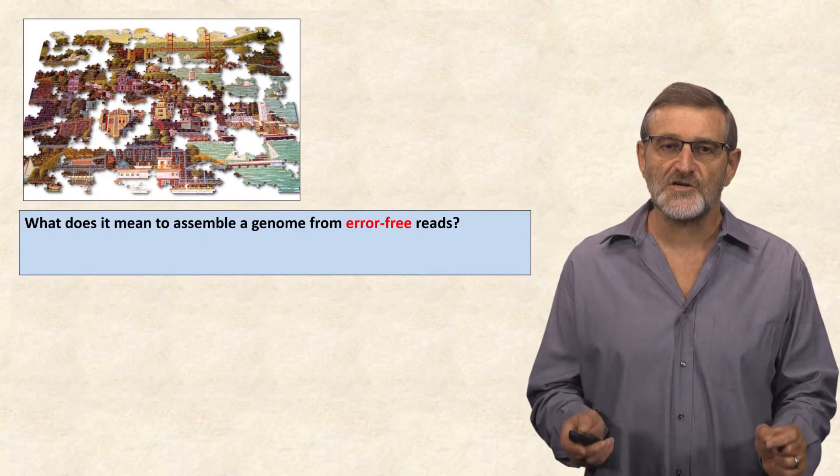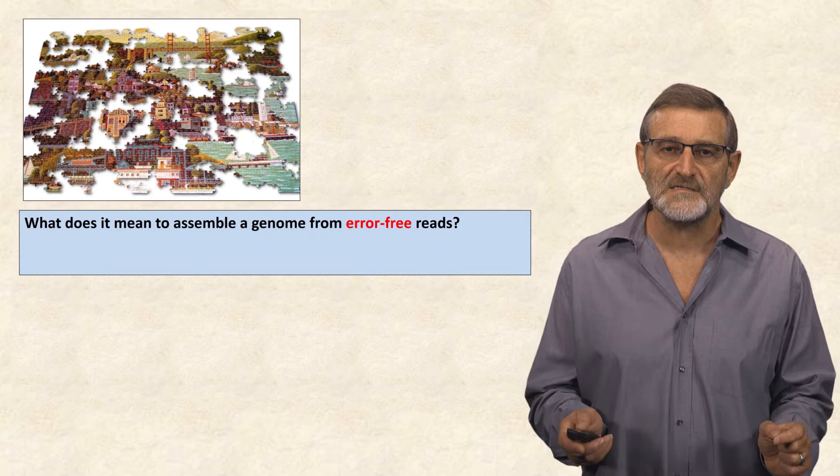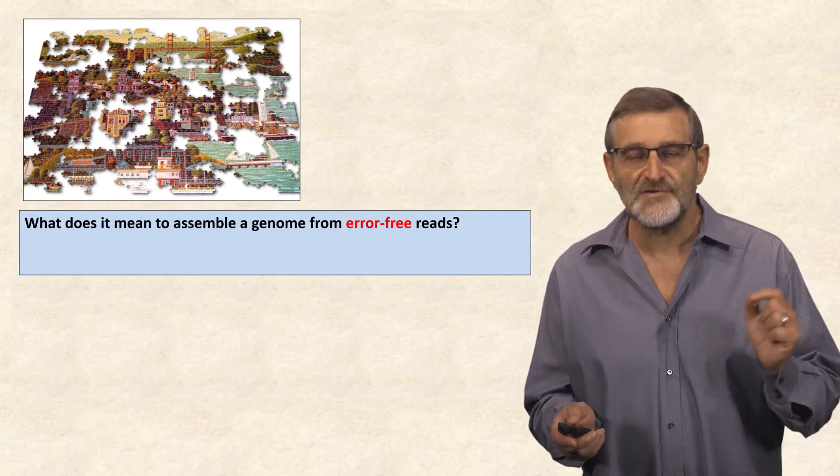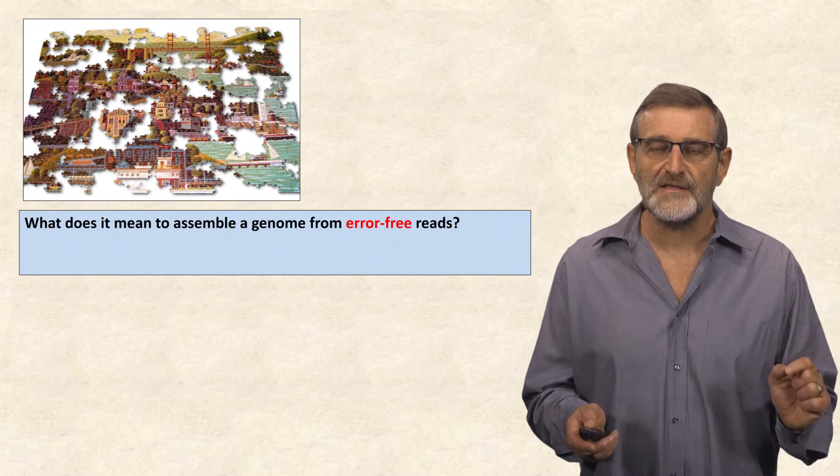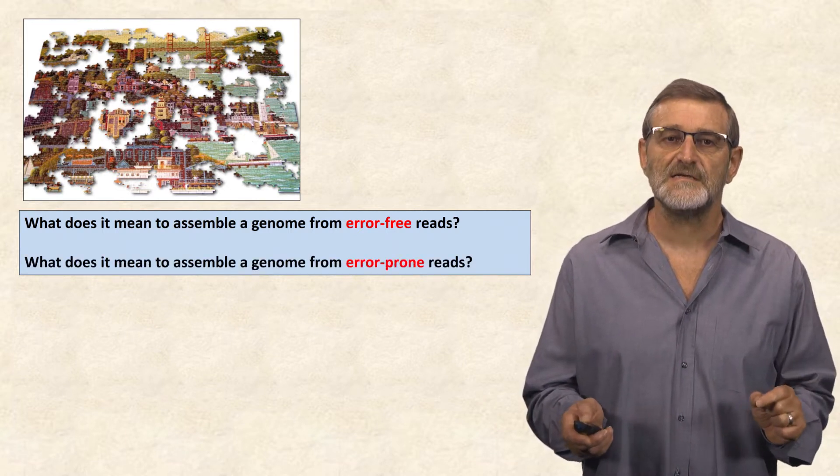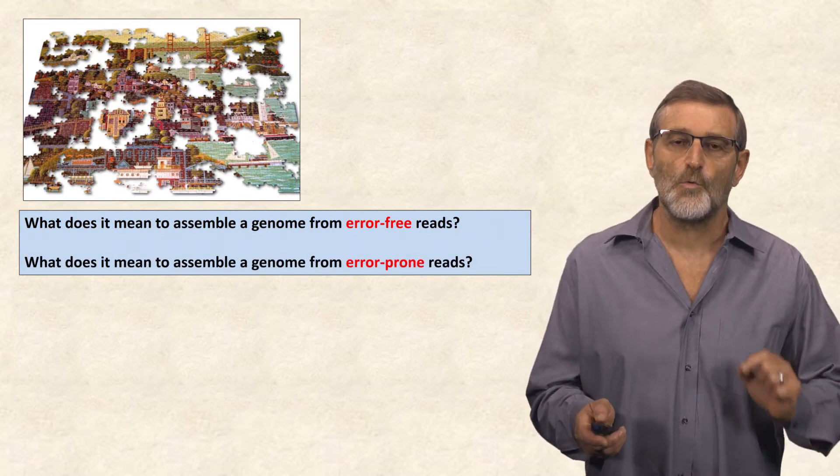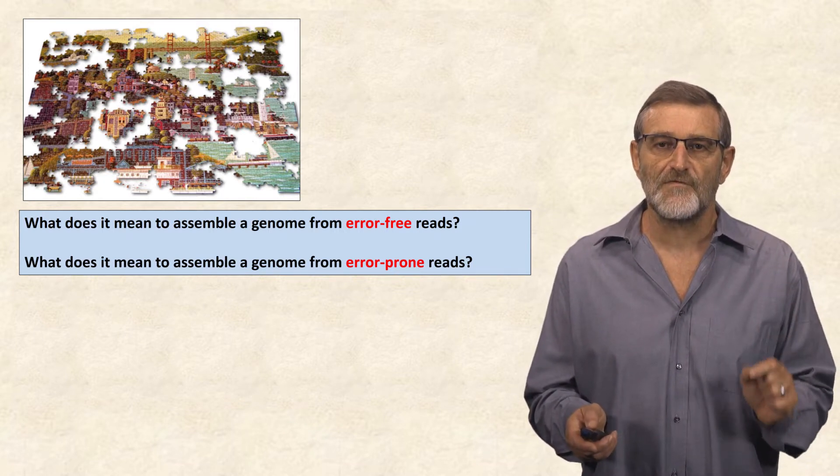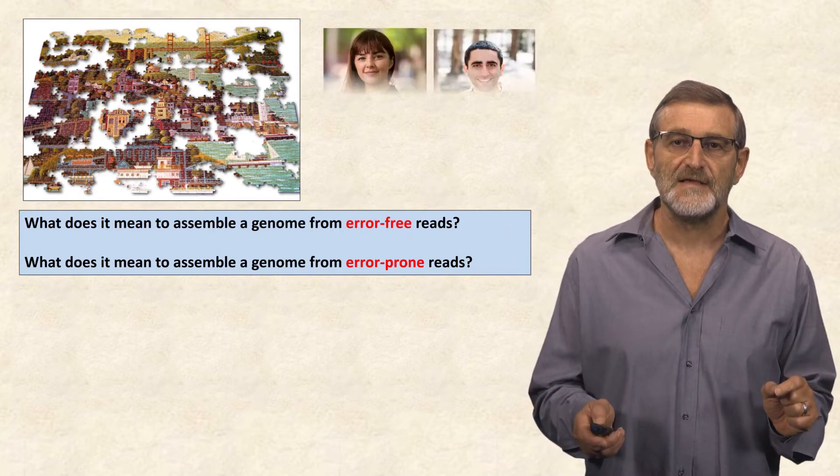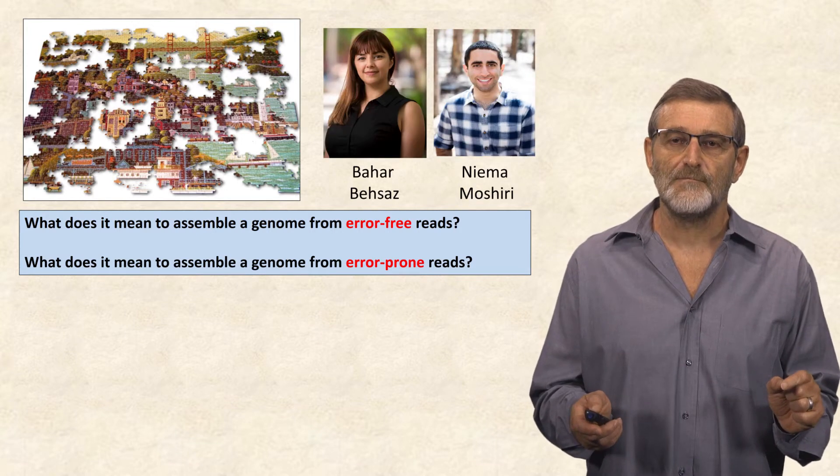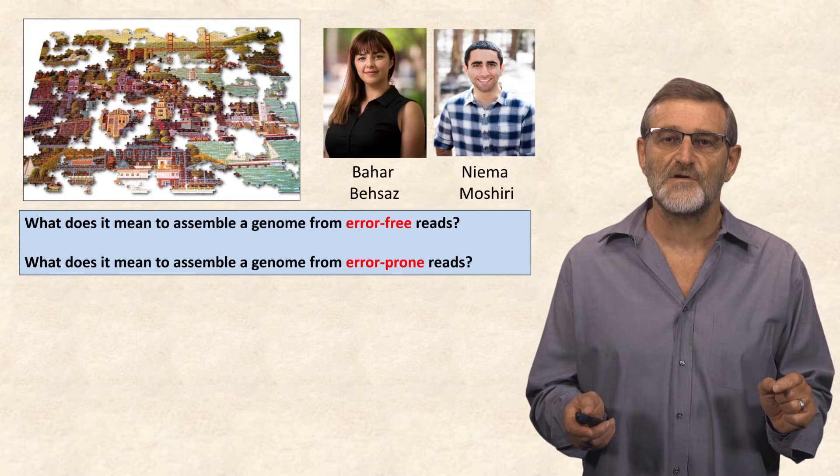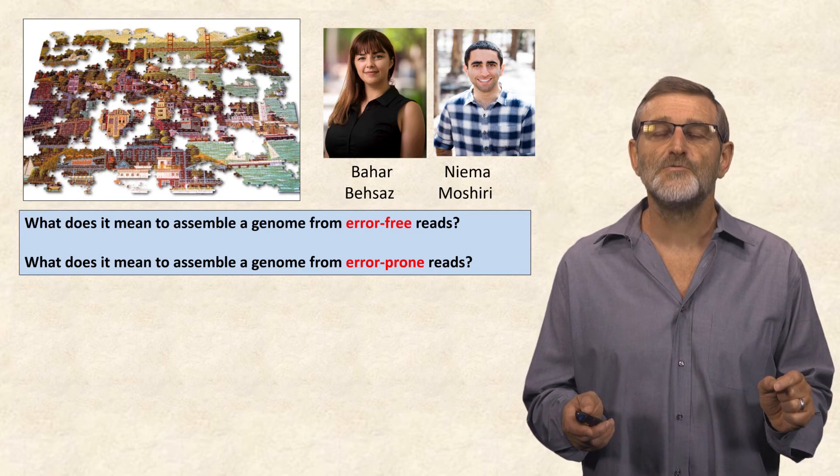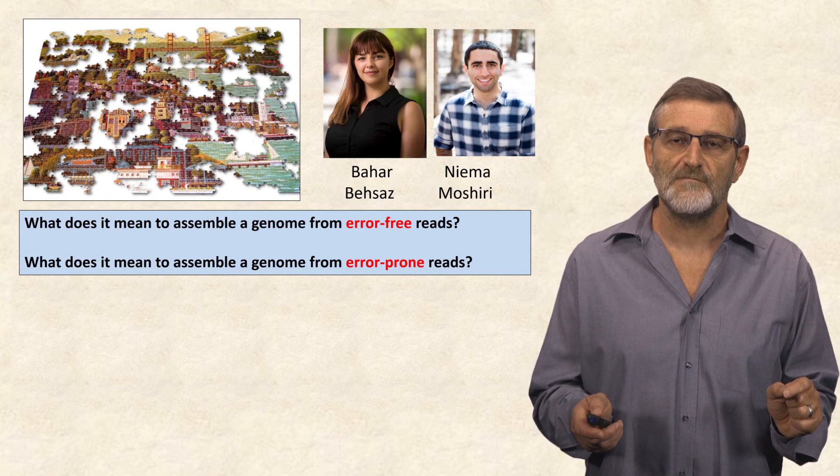In the next section, we will try to figure out what it means to assemble a genome from error-free reads. But in real life, every read typically has errors. We will thus consider one more problem: what does it mean to assemble a genome from error-prone reads? I invited bioinformatics graduate students from UCSD, Bahar Bekza and Nima Mashiri, to present various problem formulations.